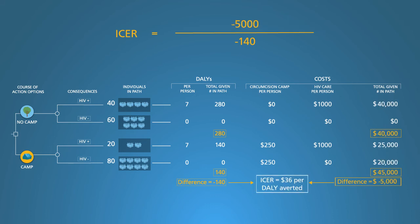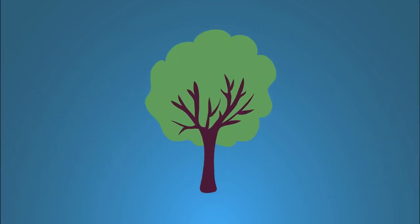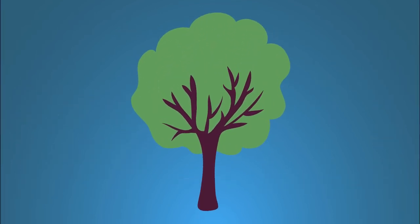Now you know how decision trees work. Adding more action options or a more complex set of outcomes is conceptually the same, just with added detail. Any CEA can be structured this way. I hope you, too, become a tree hugger.